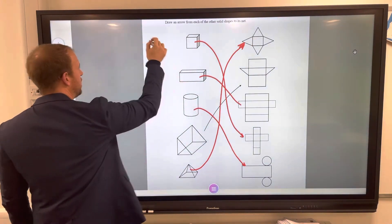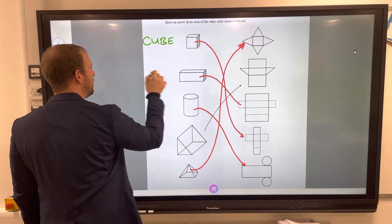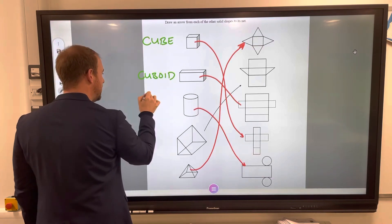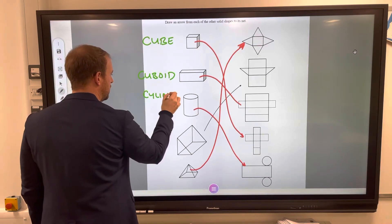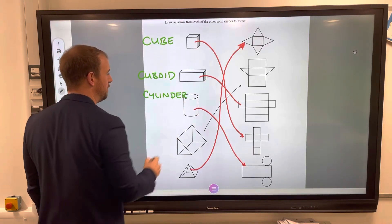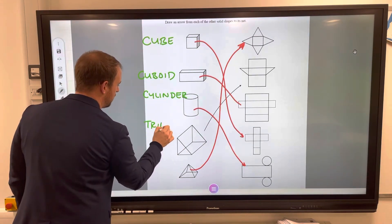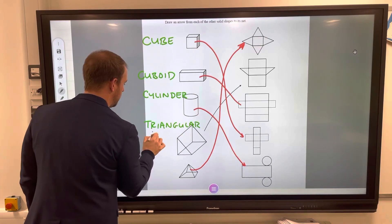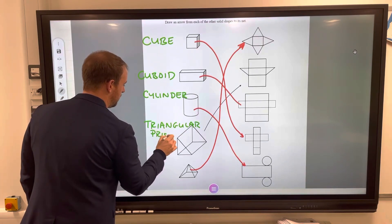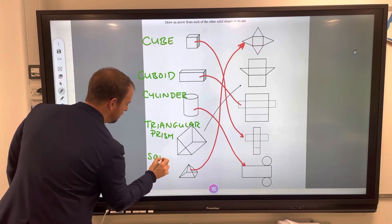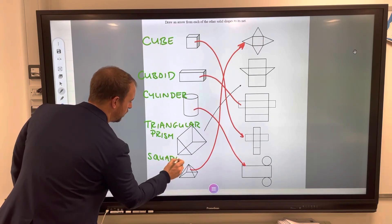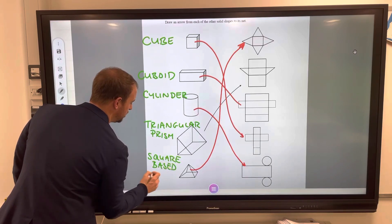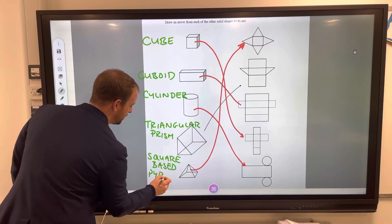Here we've got a cube, here we have a cuboid, here is a cylinder, like a Pringles tube or a Beano tin. Here we have a triangular prism, and here then we have a square based pyramid. Again, we have to identify our different 2D shapes first before we can pick the net which it corresponds to.